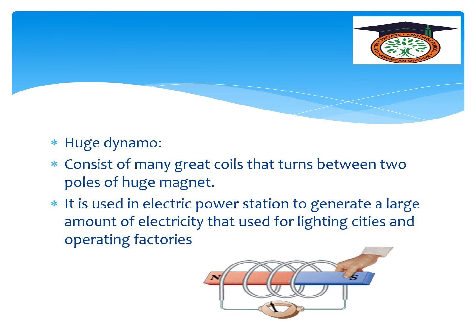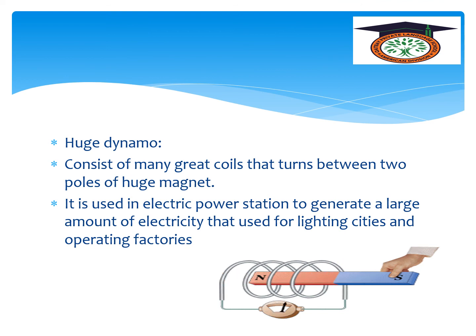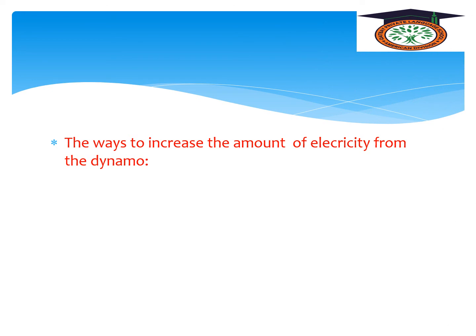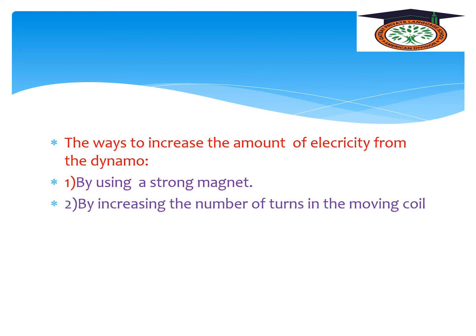Comparing the two types: the small dynamo generates a small amount of electricity to light things like a bicycle's bulb, while the huge dynamo generates a large amount of electricity used for lighting cities and operating factories. The ways to increase electricity from a dynamo: number one, by using a strong magnet; number two, by increasing the number of turns in the moving coil.